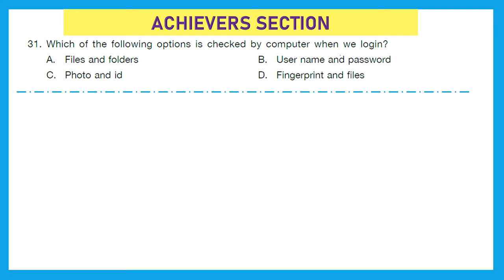Moving to our last section — that is the Achiever section. Each question holds double marks in this section. Question 31: Which of the following options is checked by a computer when we log in? Whenever we log in, what does a computer ask? A — files and folders. B — username and password. C — photo and ID. D — fingerprints and files. The right option is B — username and password is generally asked by a computer when we log in.